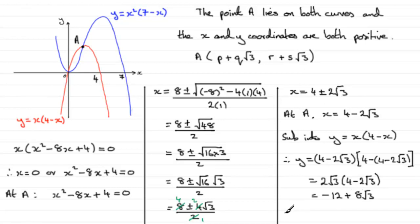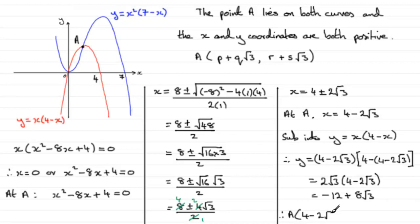So at the end of the day, we were asked to find the coordinates of A in the required form. Therefore, A has coordinates: x equals 4 minus 2 root 3, and y equals minus 12 plus 8 root 3. Here R is minus 12 and S is plus 8.